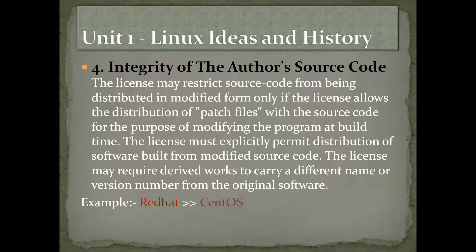Integrity of the author's source code. The license may restrict source code from being distributed in modified form only if the license allows the distribution of patch files with the source code for the purpose of modifying the program at build time. The license must explicitly permit distribution of software built from modified source code.